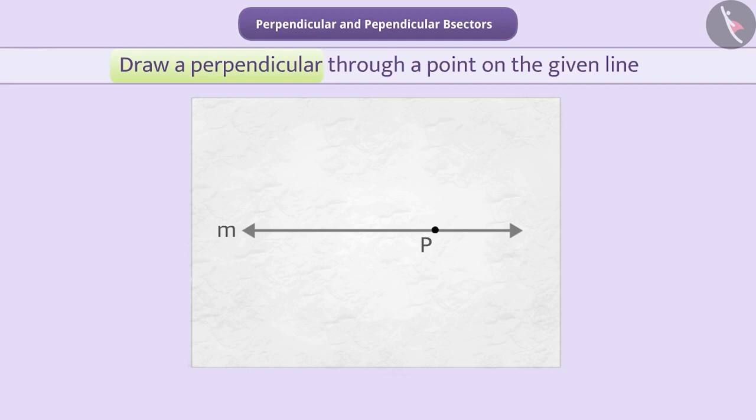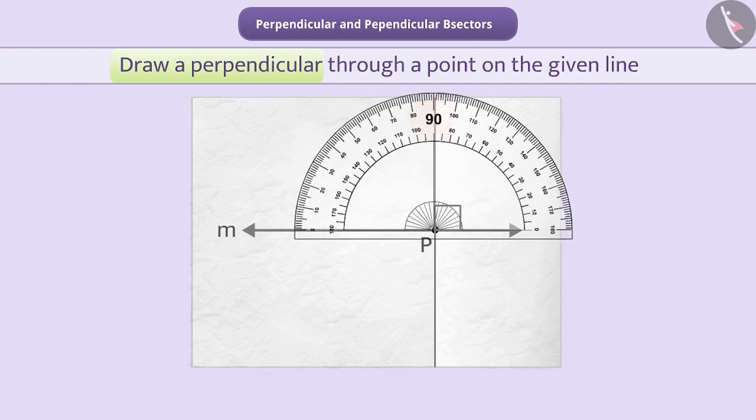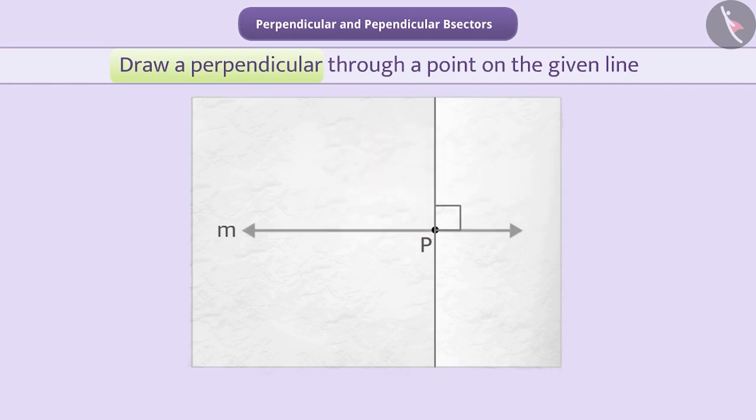For this, we will fold the paper in such a way that the crease passes through point B and one part of line M overlaps the other part completely. Once we open the paper, we will observe that the crease passes through P and it is perpendicular to line M, which means we have drawn a perpendicular passing through the point on the given line.